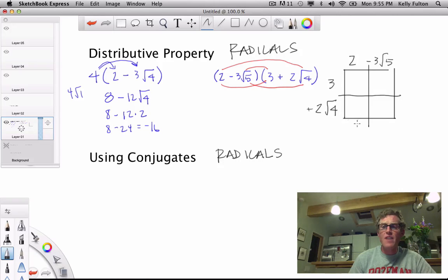And then I'm going to do 3 plus 2 root 4. There's the positive part. And then I'm just going to work my way through this. So 3 times 2, well, that's 6.